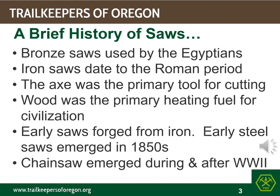The emergence of the chainsaw in the 1940s, and the consequent higher productivity of a sawyer, replaced the use of the crosscut. But with the National Wilderness Act of 1964, the crosscut again emerged as the primary tool used in wilderness areas.